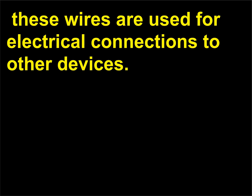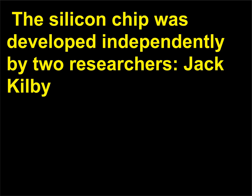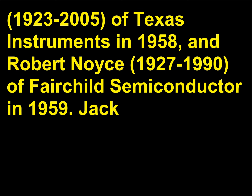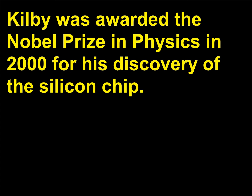The silicon chip was developed independently by two researchers: Jack Kilby, 1923–2005, of Texas Instruments in 1958, and Robert Noyce, 1927–1990, of Fairchild Semiconductor in 1959. Jack Kilby was awarded the Nobel Prize in Physics in 2000 for his discovery of the silicon chip.